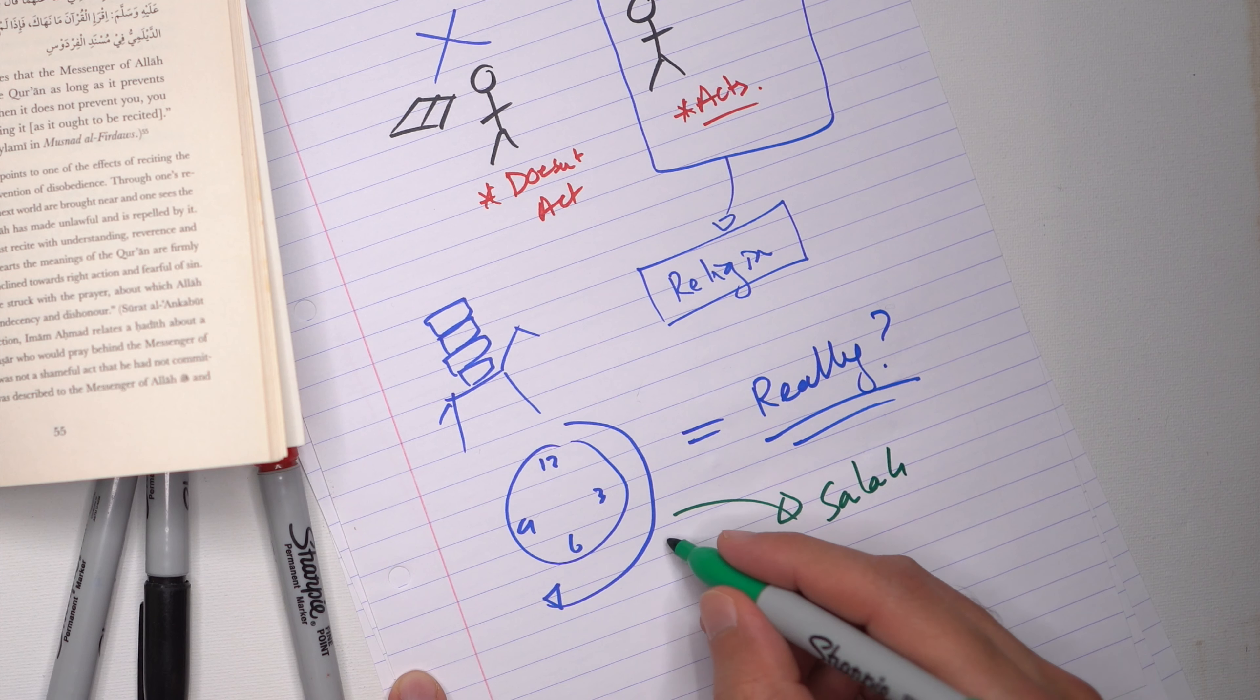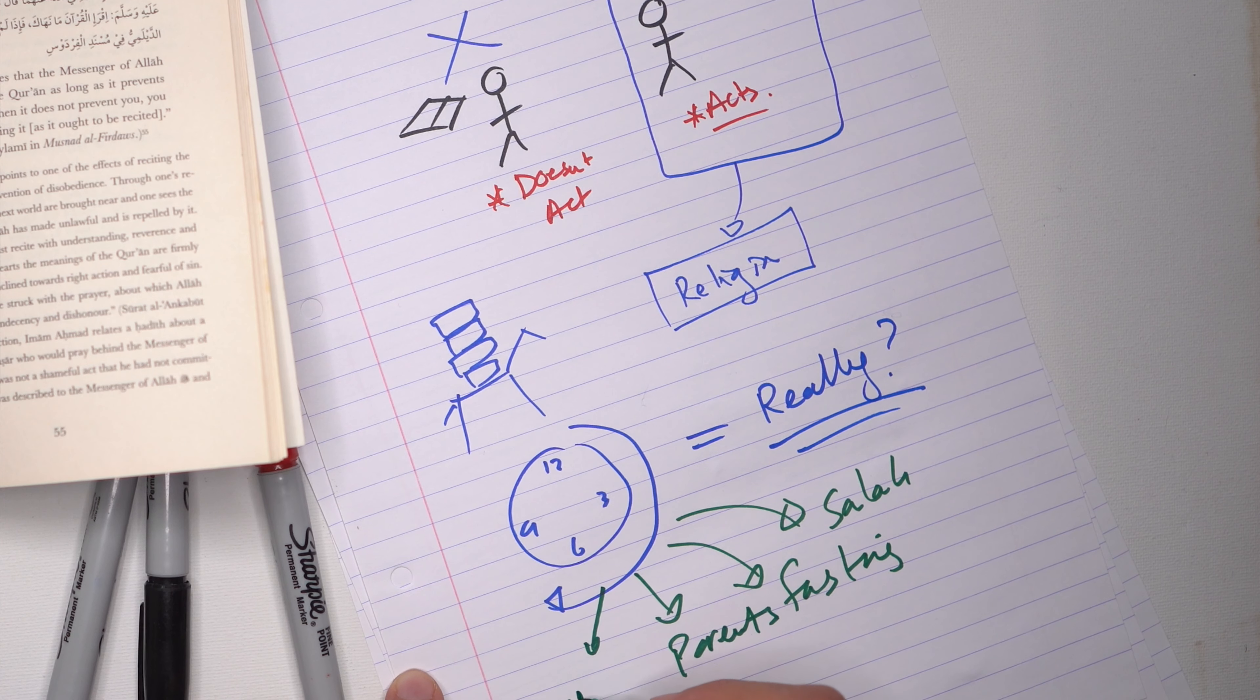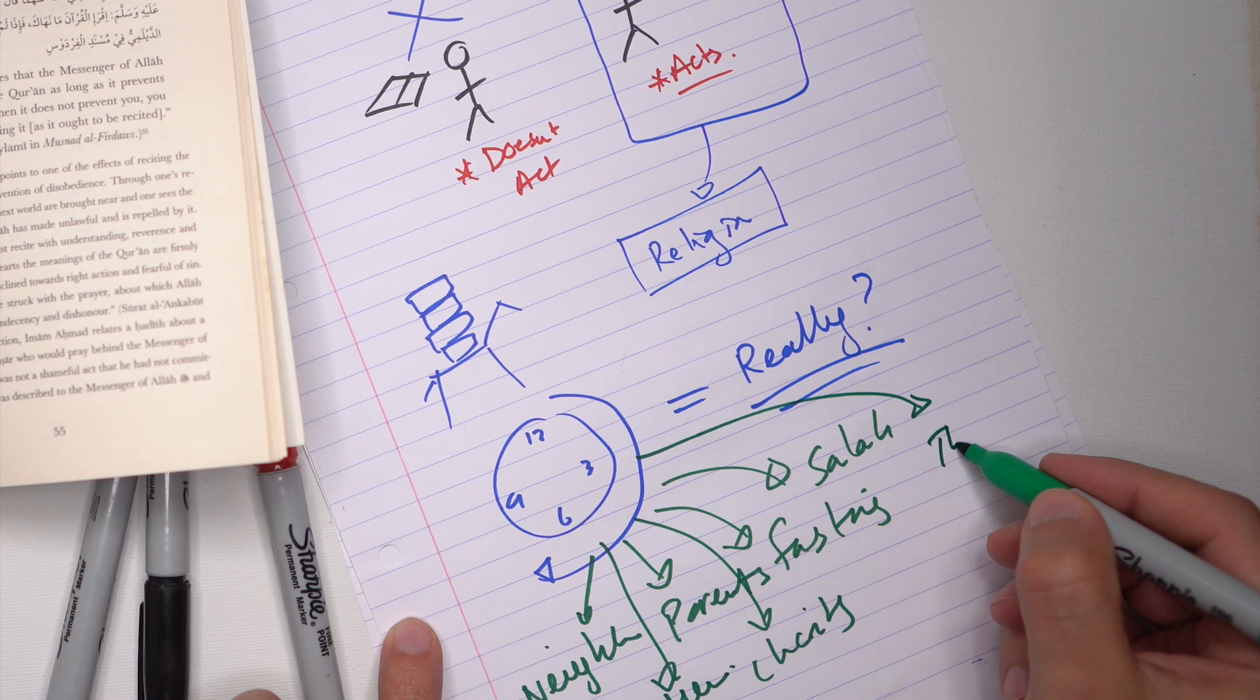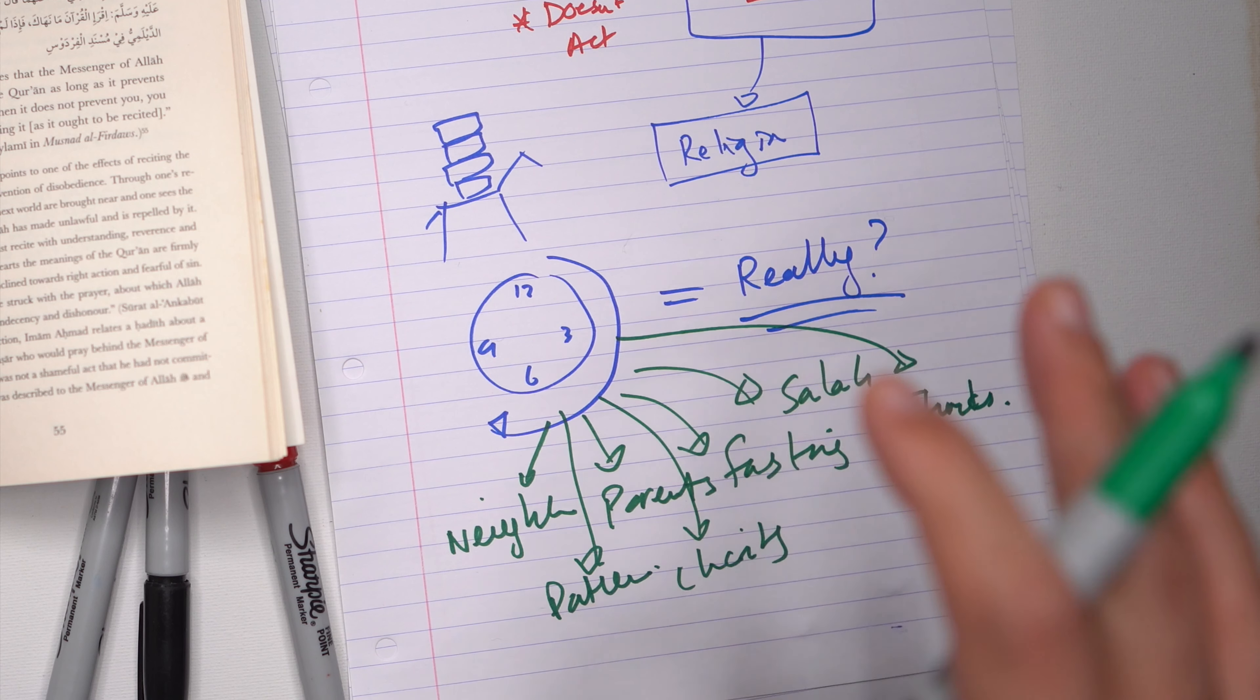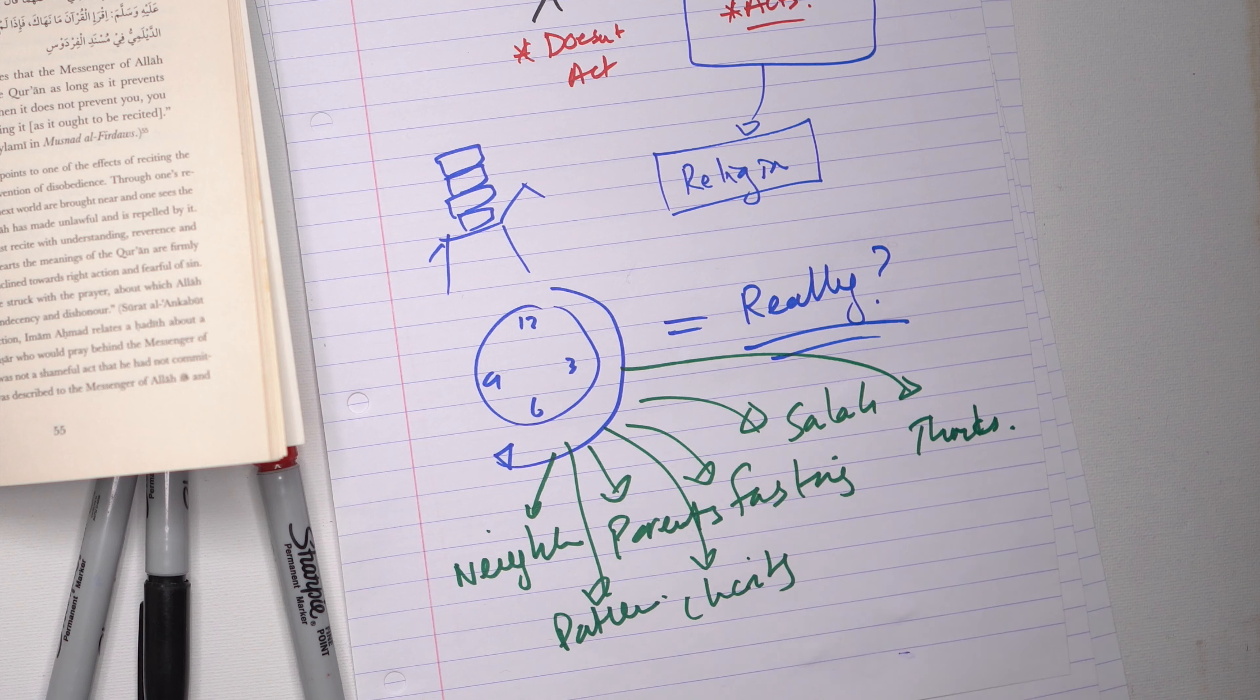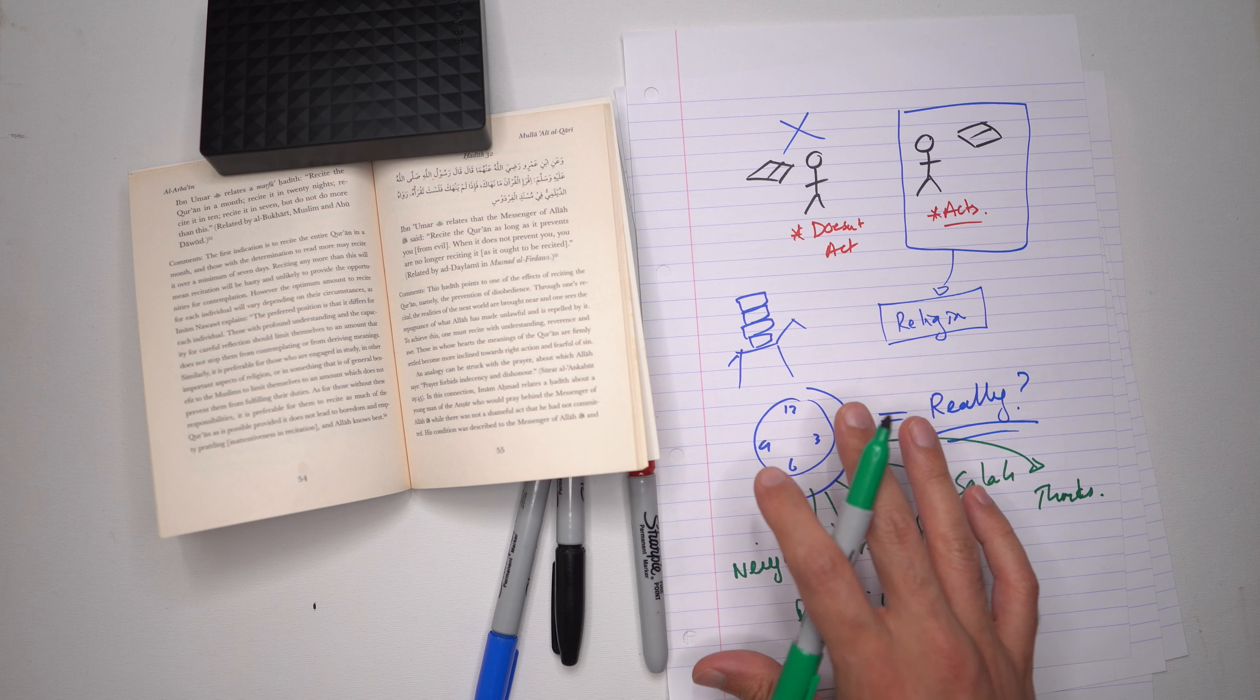How do we act upon the Qur'an? We've said this many times before. Acting upon the Qur'an includes praying our salat on time, fasting and the usual kind of things, being obedient to our parents, listening to our parents, helping our neighbors, giving to charity, having patience, having thanks, making thanks to Allah.